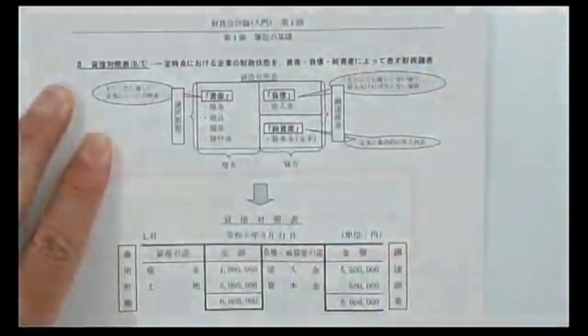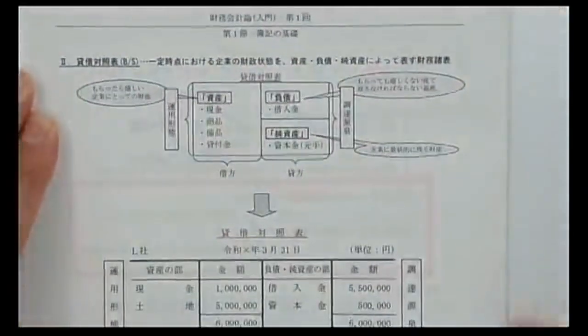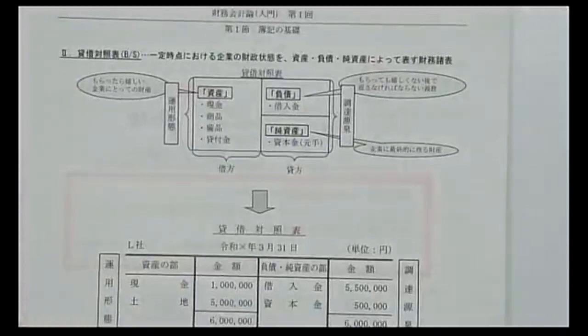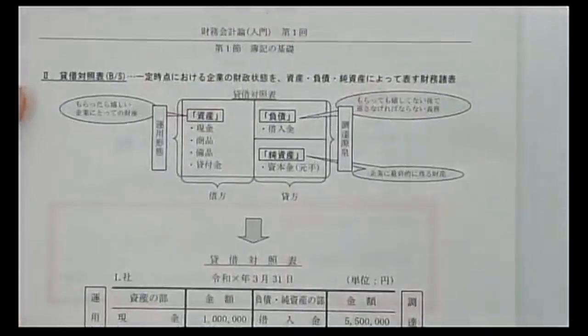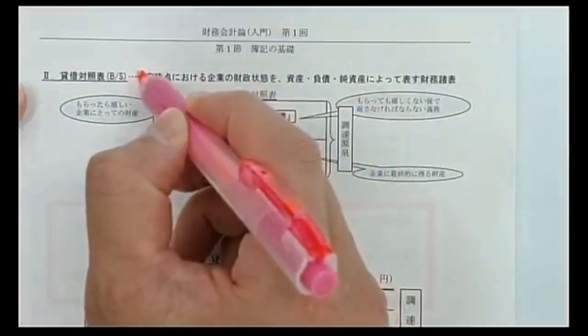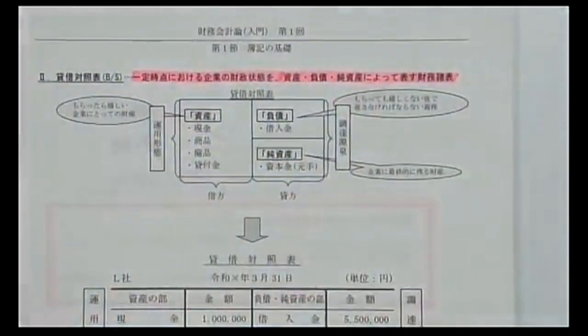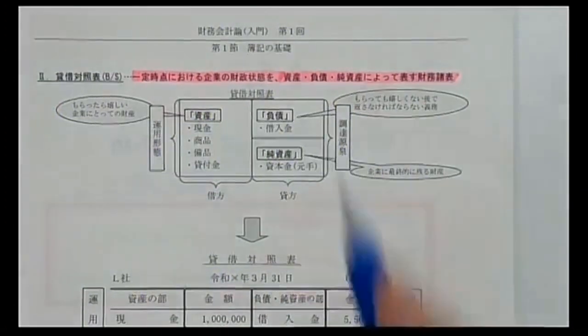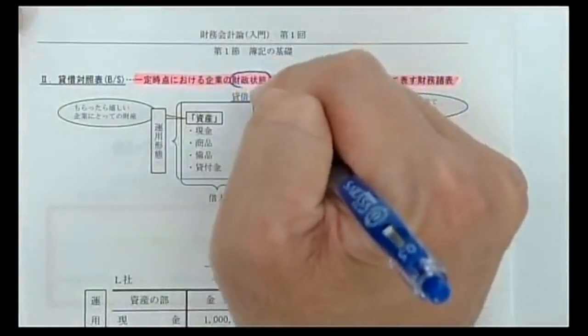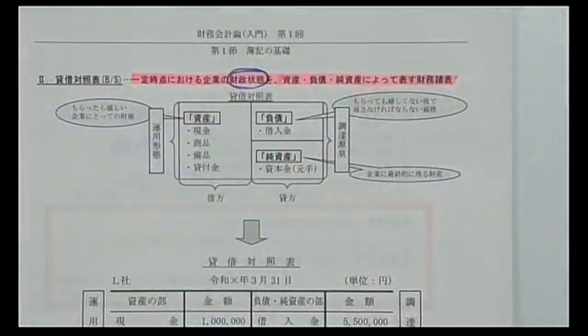簿記の最終目的は損益計算書と貸借対照表を作ることでした。貸借対照表について詳しく見ていきます。貸借対照表の意義は、一定時点における企業の財政状態を資産・負債・純資産によって表す財務諸表です。財政状態とはどれだけ財産があるかということです。